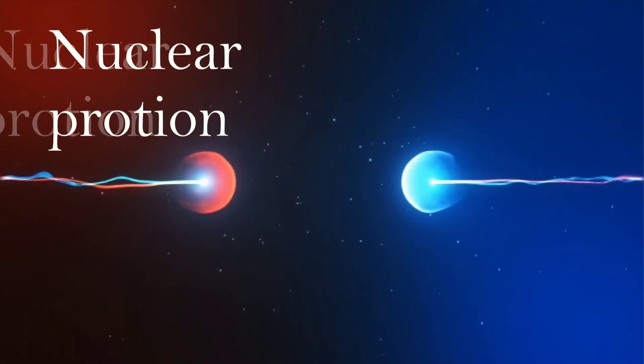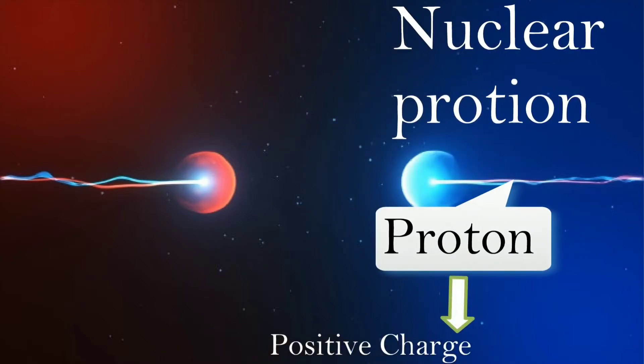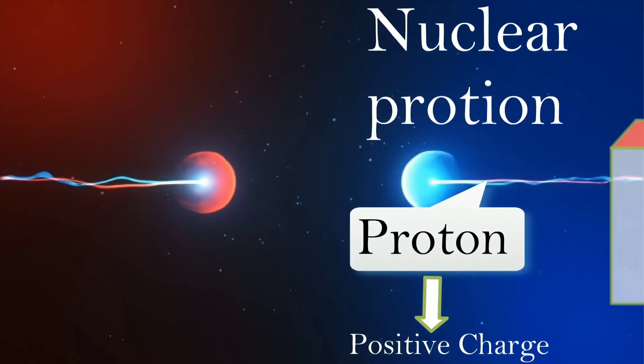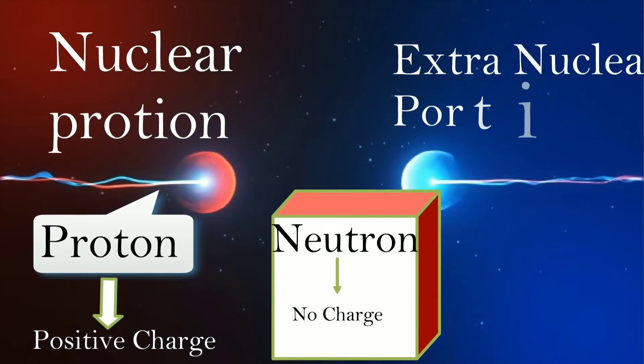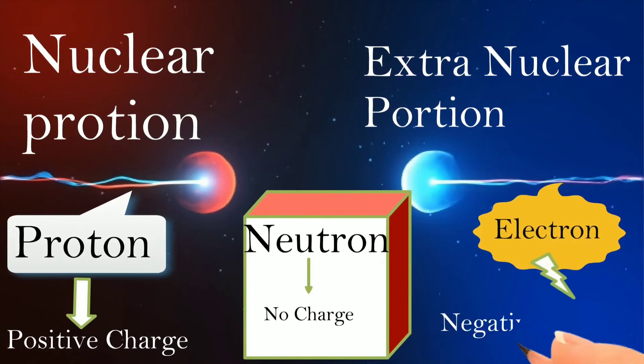The nuclear portion consists of protons, which is positively charged, and neutrons, which has no charge. The extra nuclear portion consists of electrons, which is negatively charged.